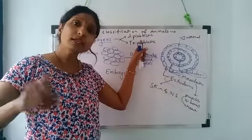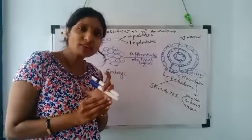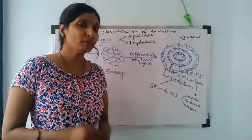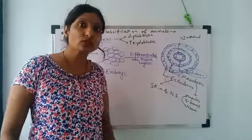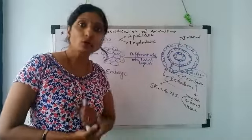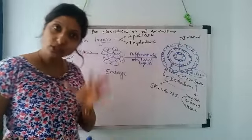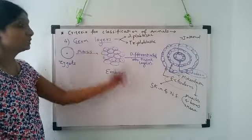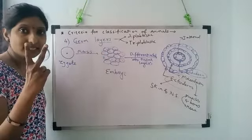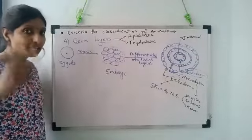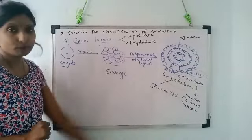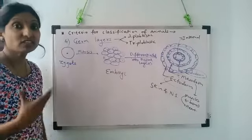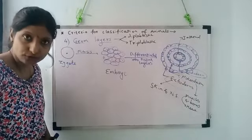So these diploblastic animals, their body is less developed. In our body we have three germ layers, so our body is more developed. We have muscles, bones, these extra structures for movement and locomotion. Understood students? So the next criteria for classification of animals is germ layers. Animals having two germ layers are diploblastic, animals having three germ layers are triploblastic.